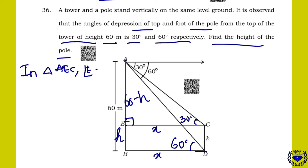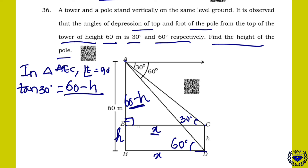In triangle AEC, angle E is 90 degrees. Tan 30 = opposite over adjacent = (60 minus H) over X. Tan 30 is 1 over root 3, so 1 over root 3 = (60 minus H) over X. This is equation 1 — two variables.